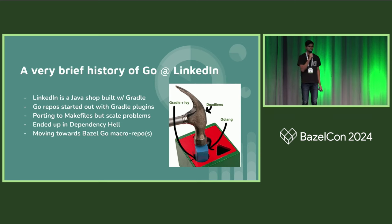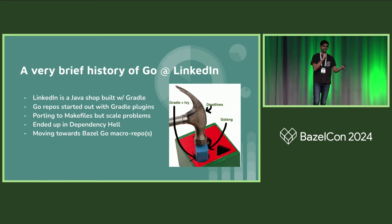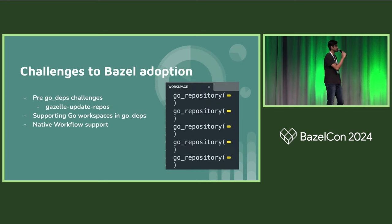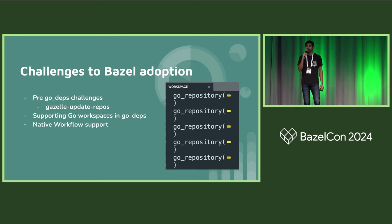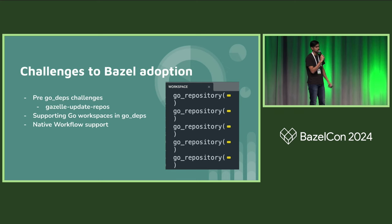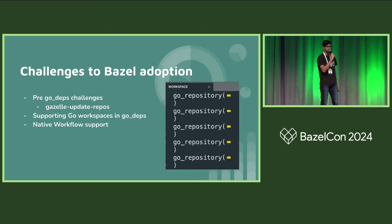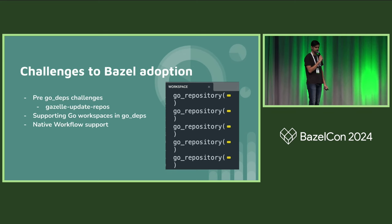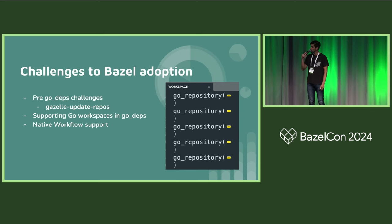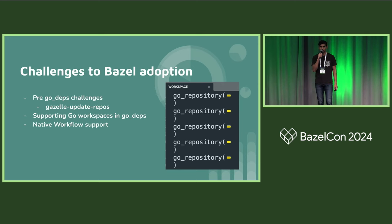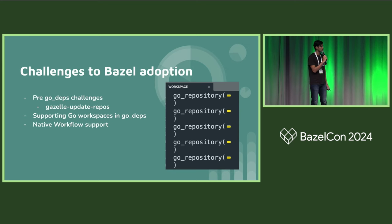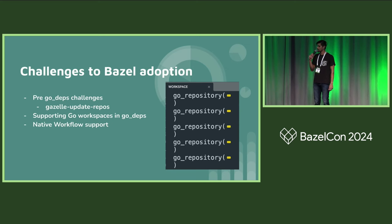So we decided to tackle both of these problems at the same time, and we pitched moving the Go ecosystem at LinkedIn to a Bazel macro repo model — ideally a few Go repos at LinkedIn that get the job done. When we first pitched this last October — a month before last year's BazelCon — we basically told developers they'd have to run Gazelle update repos to populate the workspace file with Go repository rules, seemingly infinite such rules, and do this every time they hoped to make any changes. That proposal was pretty much dead on arrival, because after almost a decade of enduring custom build processes for Go, developers were not keen on adopting what they saw as yet another custom system forcing them to run commands they didn't understand.